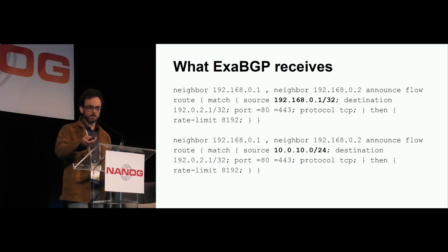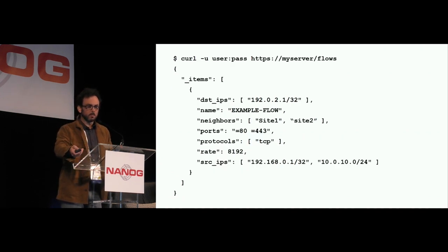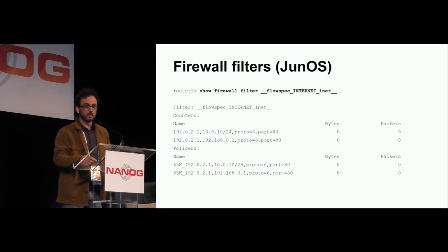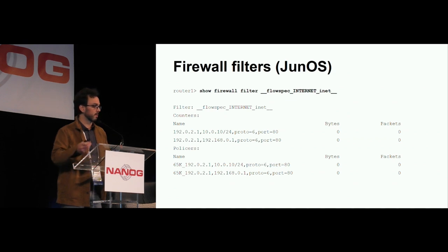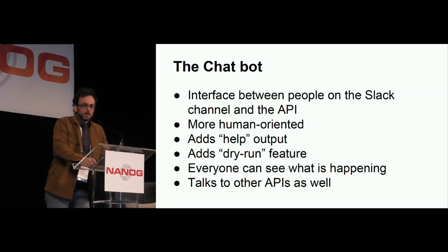Notice that here we are telling ExaBGP which neighbors are supposed to receive the announcement. Because we specified the site previously, we don't want that rule to go everywhere — we want it to go to a specific router. In this case the routers are these two. And that is a great feature in ExaBGP. Then in Junos, you can actually see when that flow spec is received — you can see that the filter is created. And like any other filter, you can look at counters — packets and bytes that are discarded or that match the rule.